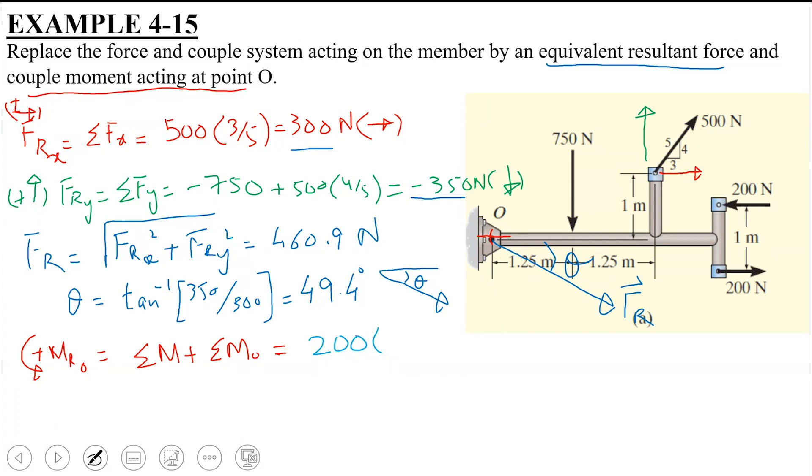And how do we calculate the couple moment? Force into perpendicular distance between those two forces. So what is perpendicular distance? Sir, one. One. And what is the direction of this couple moment? Clockwise or counter-clockwise? Counter-clockwise. Counter-clockwise. So I am going to include it with a positive sign. So this is applied couple moment, summation M.